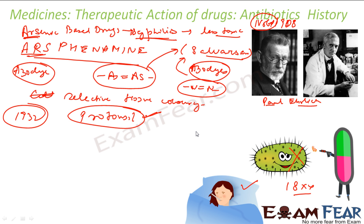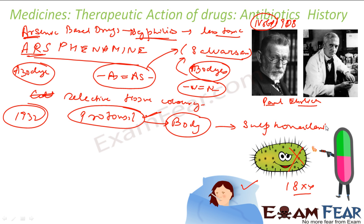Soon after, more research revealed that the human body takes prontosil and converts it to a compound called sulfonamide — which is the real active compound. So instead of giving prontosil and letting the body create the sulfa drug, why not give the sulfa drug itself? Thus, all the sulfa drugs were born. Many sulfa drugs were created after this — for example, sulfapyridine is one such sulfa drug.